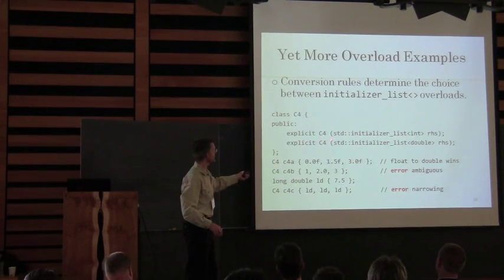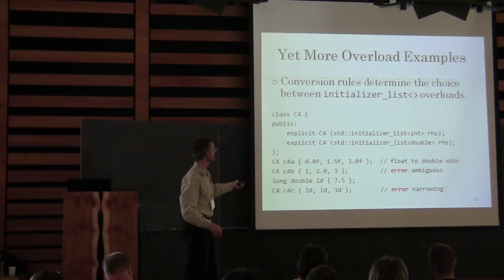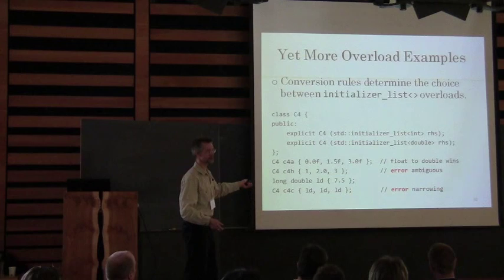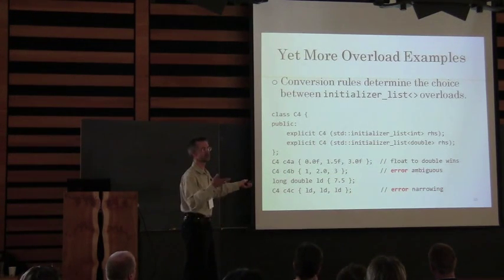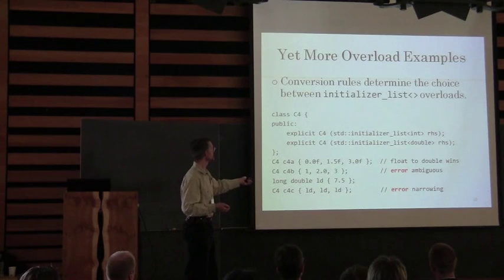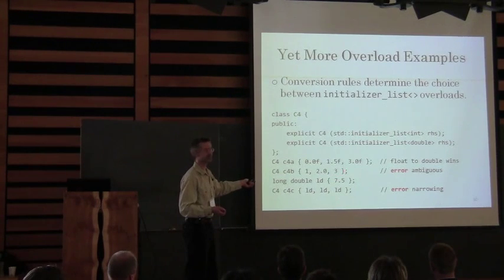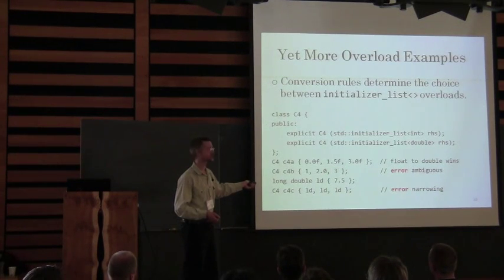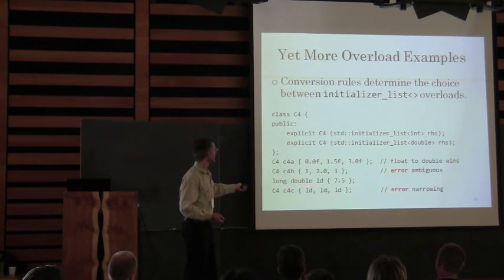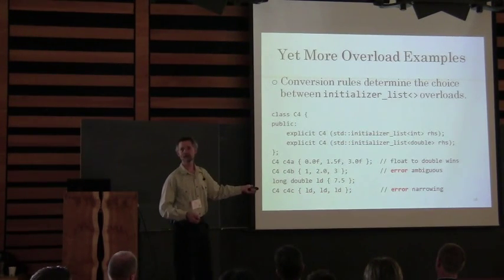We've got conversion rules. We've got an overload on two constructors: an initializer list of ints and an initializer list of doubles. If I've got floats, floats unambiguously don't narrow when converting to doubles, so this one will call the constructor that takes doubles. The other case will give a compile error because it doesn't know which to pick. And compile-time errors are your favorite kinds of errors, whether you know that or not.